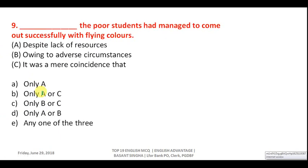Question nine: complete the sentence about a poor student. Option A: 'The poor student had managed to come out successfully with flying colors despite lack of resources' — correct. Option B: 'Owing to adverse circumstances the poor student had managed to come out successfully with flying colors' — wrong, you cannot say 'because of adverse circumstances' for a positive outcome. Option C talks about coincidence or tragedy — not relevant here. Correct answer is only A.